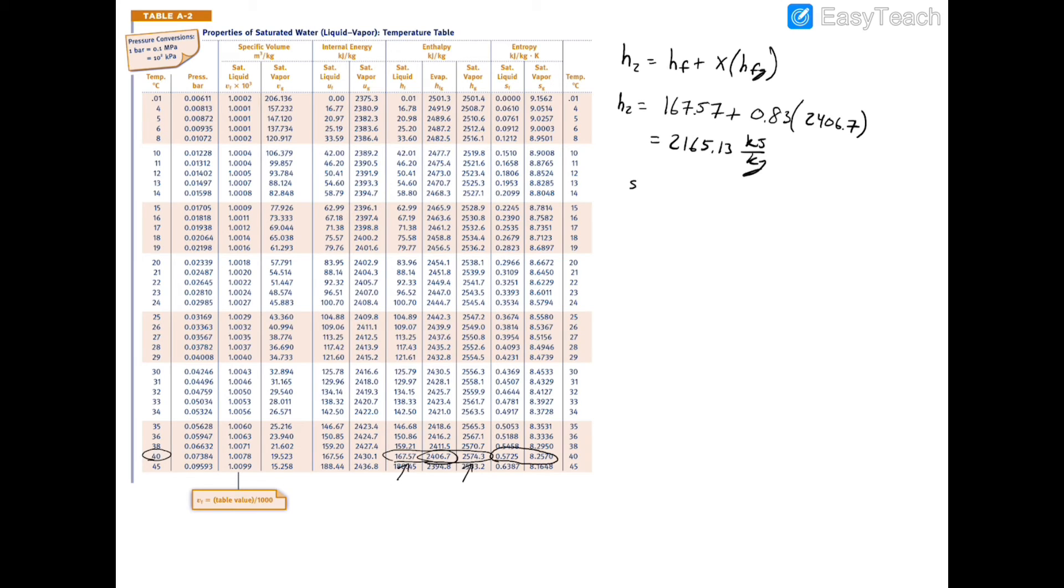We'll have s2 equals sf plus x times (sg minus sf), which equals 0.5725 kilojoules per kilogram kelvin plus 0.83 times (sg which is 8.2570 minus sf which is 0.5725). If you plug that into your calculator, s2 equals 6.9506 kilojoules per kilogram kelvin.